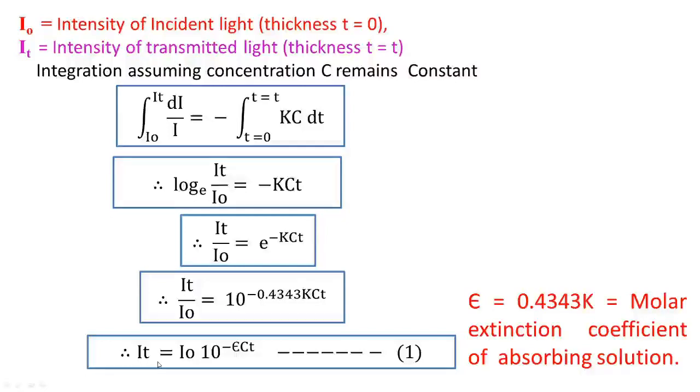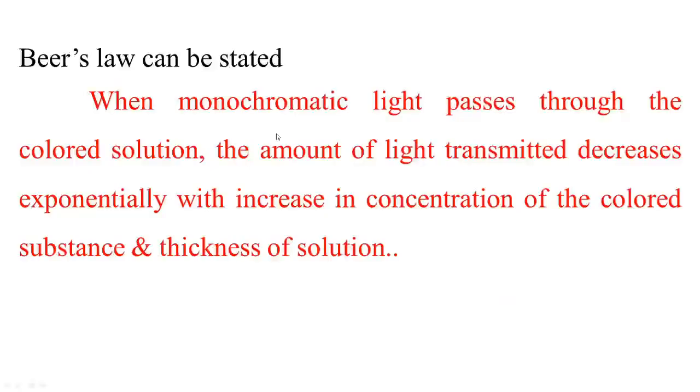This equation is the mathematical expression for Beer's law. Beer's law can be stated as: when monochromatic light passes through the colored solution, the amount of light transmitted decreases exponentially with the increase in concentration of the colored substance and thickness of solution.